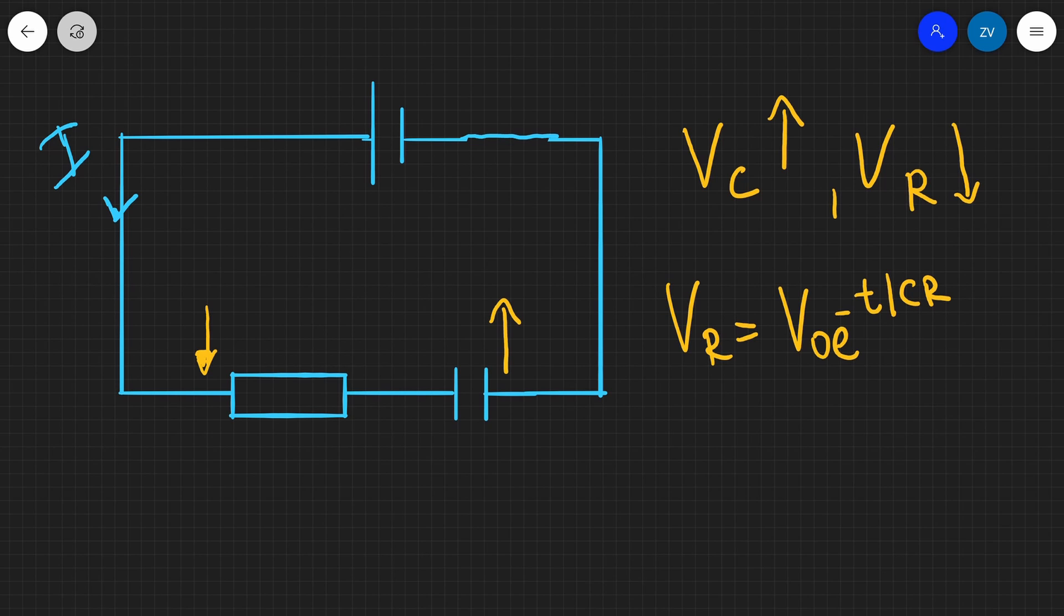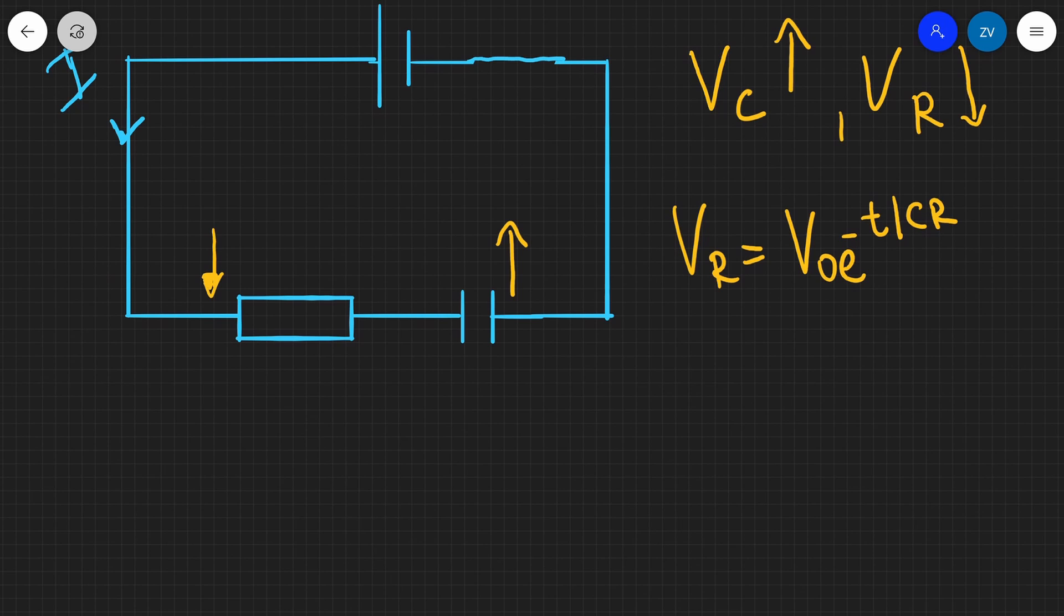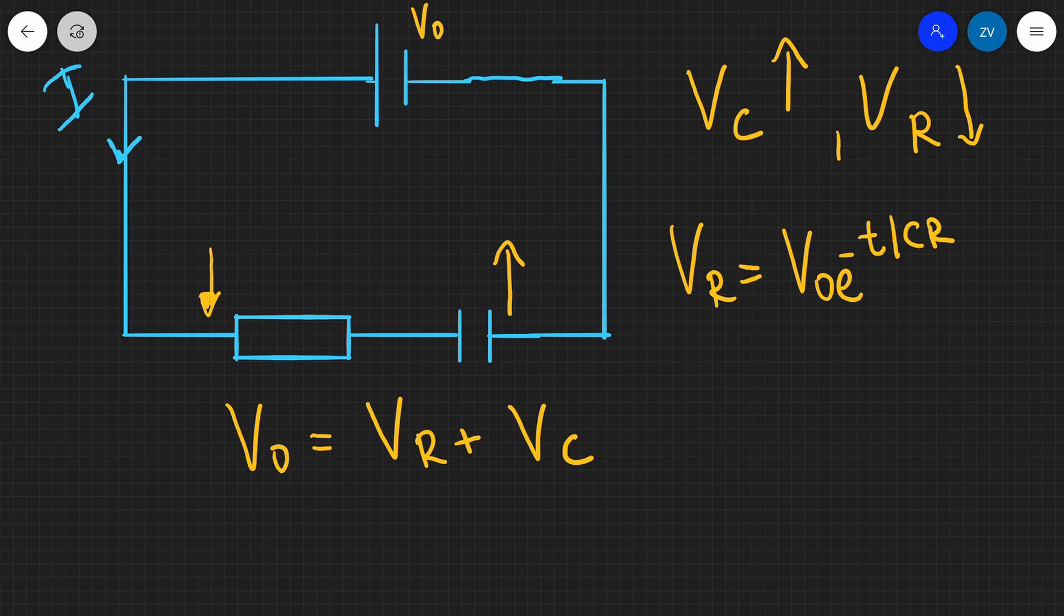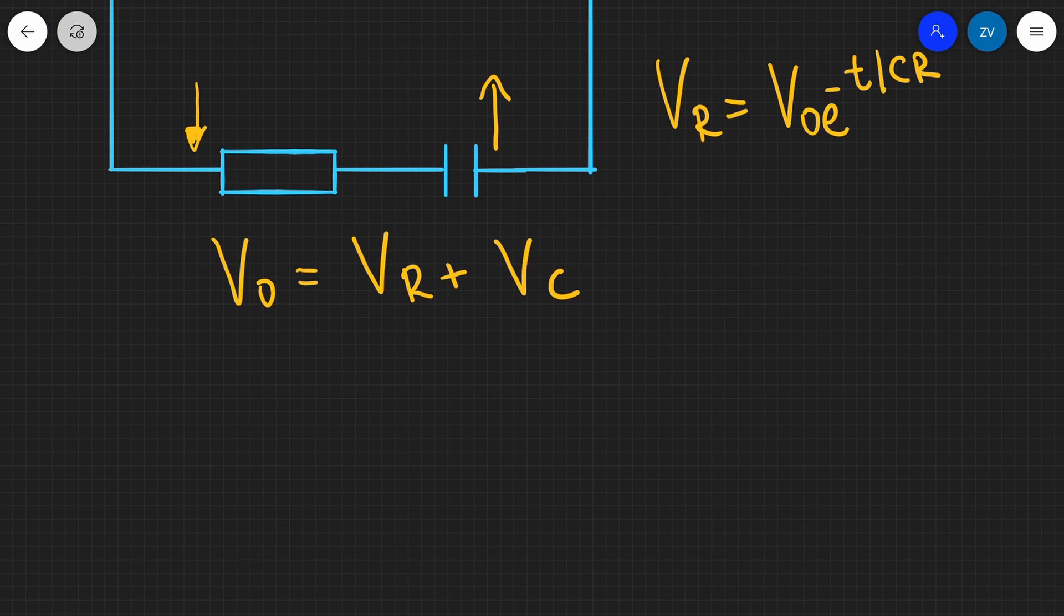Now, we can apply Kirchhoff's second law directly here. And if we remember correctly, Kirchhoff's second law is that the sum of the EMFs is equal to the sum of the potential differences across a circuit. Let's say that our initial voltage, we're going to call that V0. So this is just our EMF. So V0 is going to equal VR plus VC, where VR is the potential difference across the resistor and VC the one across the capacitor.